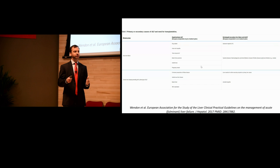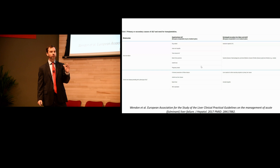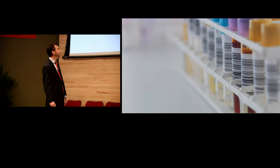If you see cirrhosis on imaging or know the patient is cirrhotic, typically think chronic. But Wilson's, Budd-Chiari, and hepatitis B reactivation are exceptions — they are chronic liver diseases that present with an acute picture and should be managed just like regular acute liver failure.